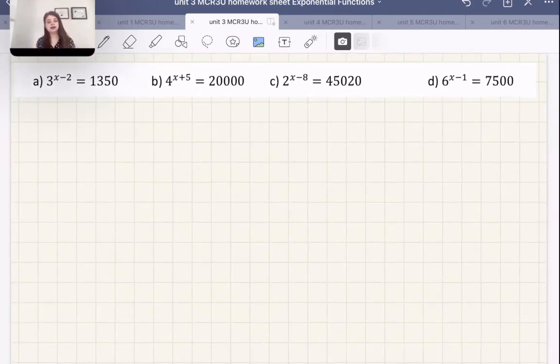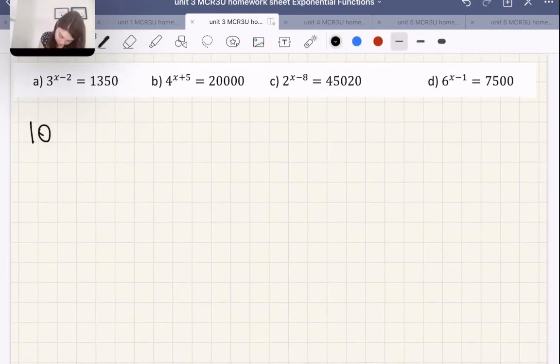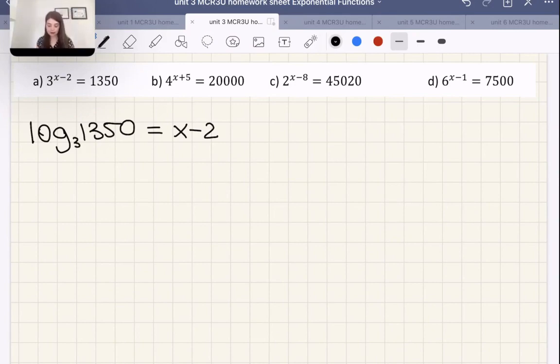Let's talk about these ones next. So these ones are going to be very similar to the previous ones, but you'll notice that instead of just 2 to the power of x or 3 to the power of x, it has x minus 2, x plus 5, x minus 8, and x minus 1. So there is a slight difference here. In this case, we're going to have log with a base 3, for example, to the power of x minus 2, 1,350, like that. So here we're basically, we're going to use the same method as before, but at the end we're going to have to add 2 to both sides to isolate x. So very similar method as before, so no worries there.